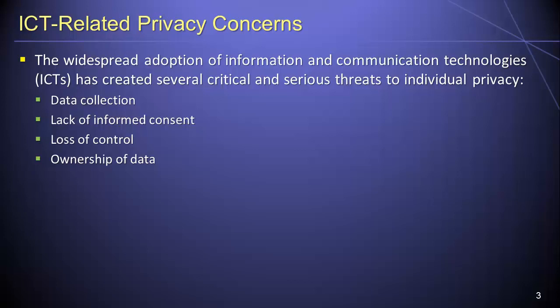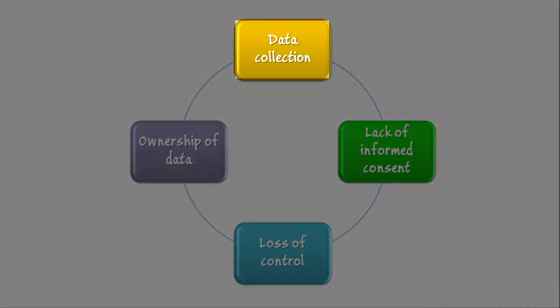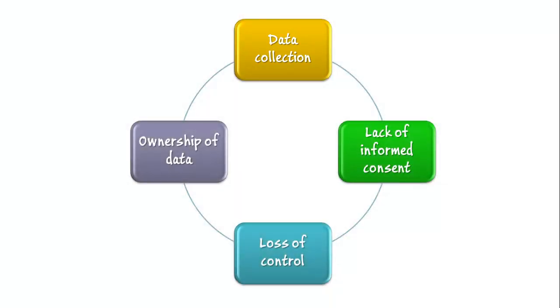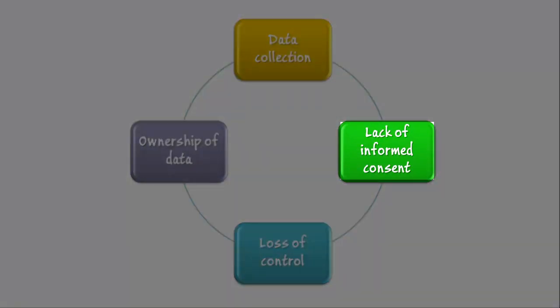The widespread adoption of information and communication technologies, or ICTs, has created several critical and serious threats to information privacy. The first of these threats is data collection — ICTs allow massive amounts of potentially private data to be collected, shared, and analyzed. The second critical threat is lack of informed consent. Potentially private information about the actions or preferences of specific individuals is routinely collected without the explicit consent of the individuals themselves. Examples include web searches, product preferences, IP addresses, location information, and so forth.